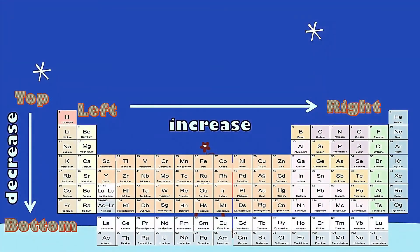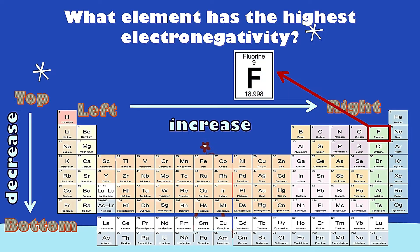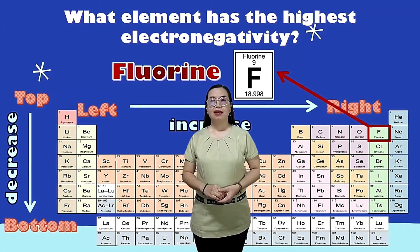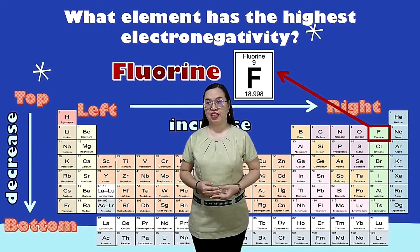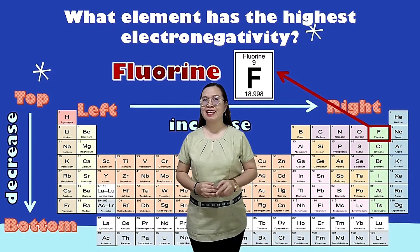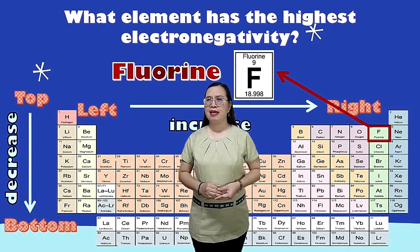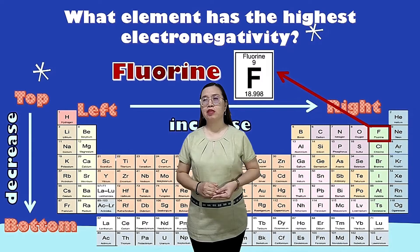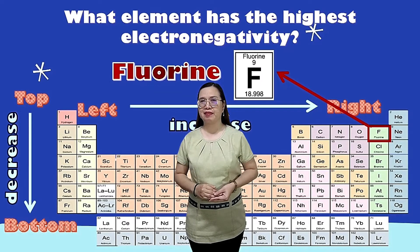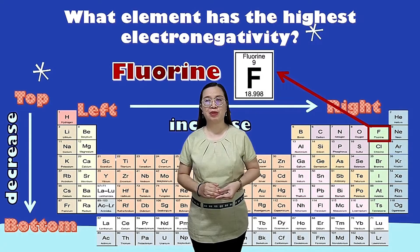Based on this, what element has the highest electronegativity? Very good! It's fluorine. Now, some of you might say it's helium — yes, it has the highest value based on this chart. But technically, elements in the noble gases are exempted, because they don't need to combine with other elements to become stable.